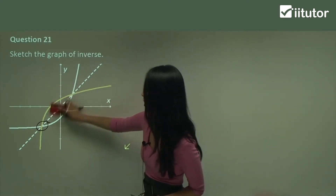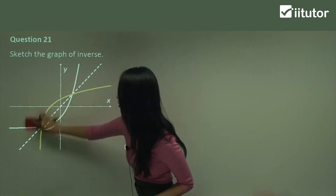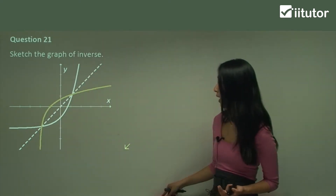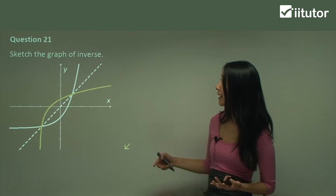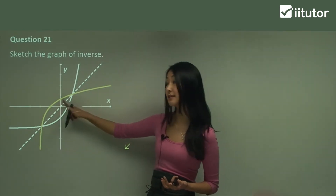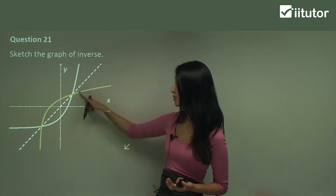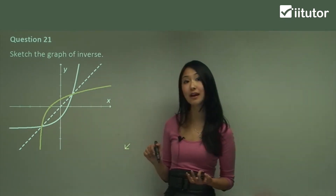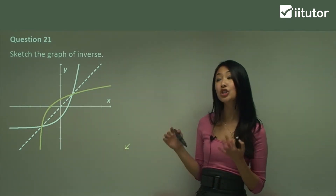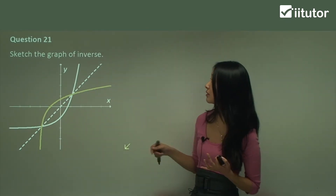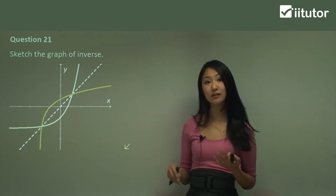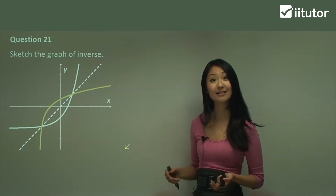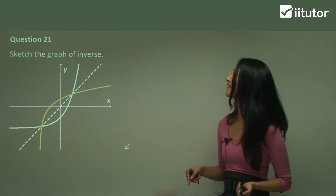So there are a couple of checkpoints you can do to make sure you've drawn the right inverse curve. You can check that it does cross at the points that the original curve crosses on y equals to x. And you can check a little portion — check this portion: is that flipped over correctly? Yes it is, so you know you're on the right track there.